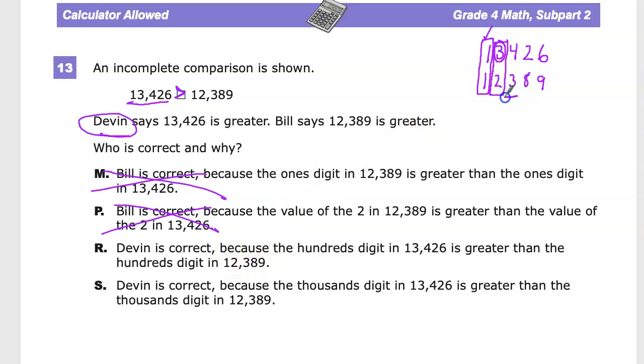Devin is correct, because the hundreds digit in 13,426 is greater than the hundreds digit in 12,389. Well, here's the hundreds place. Let me change colors here. Here's the hundreds place. And yeah, four is greater than three. That is true.